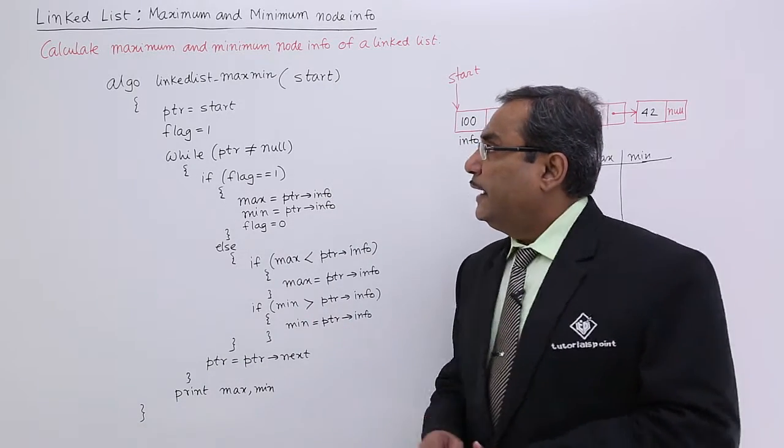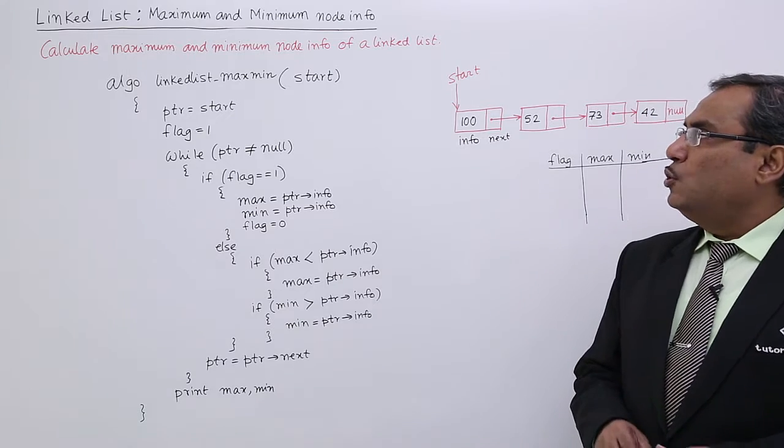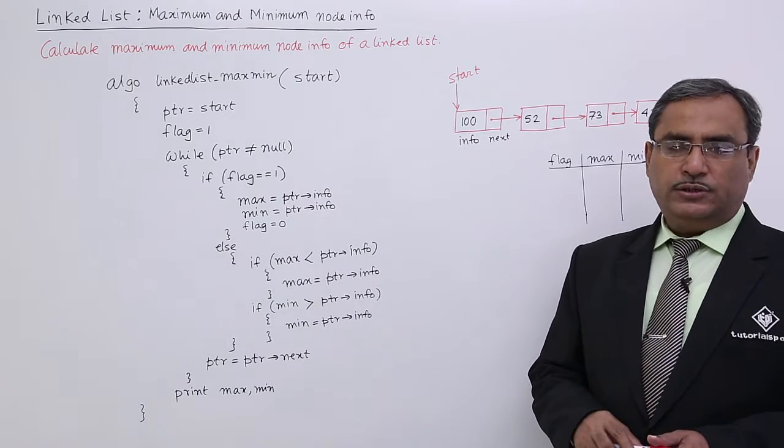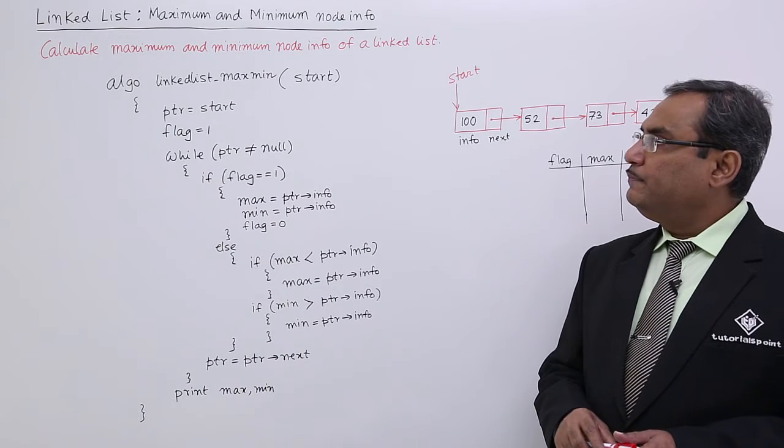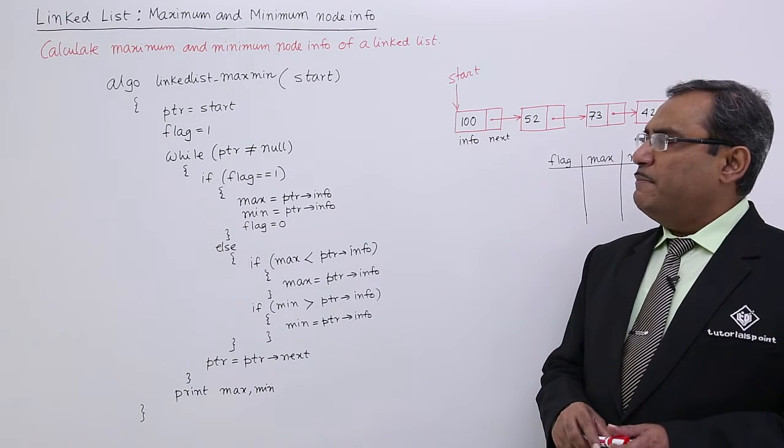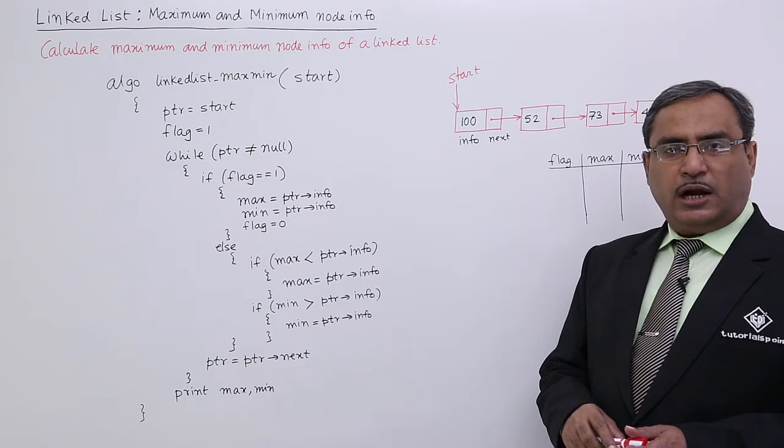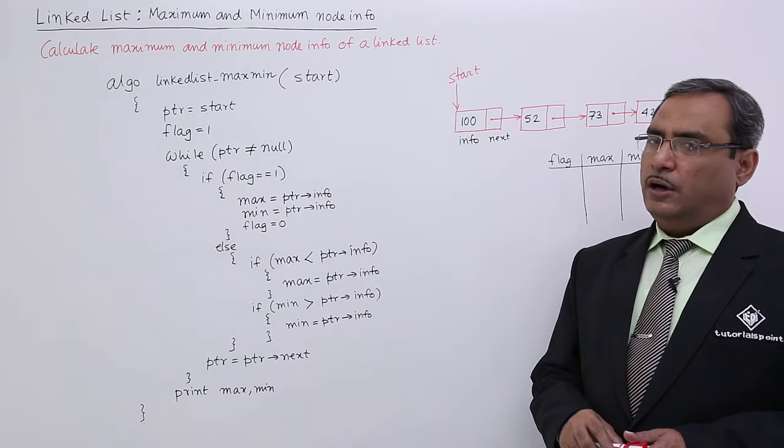Calculate maximum and minimum node info of a linked list—that is our question. Here we have written the respective algorithm: linked list maxmin start. Start is the starting address of the linked list.